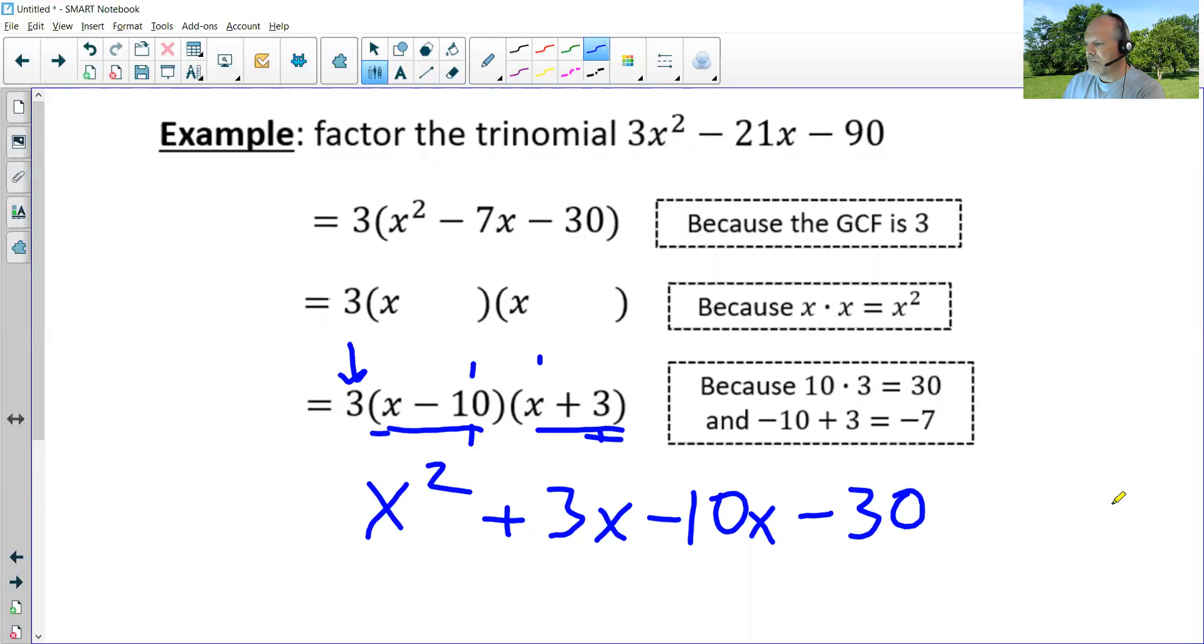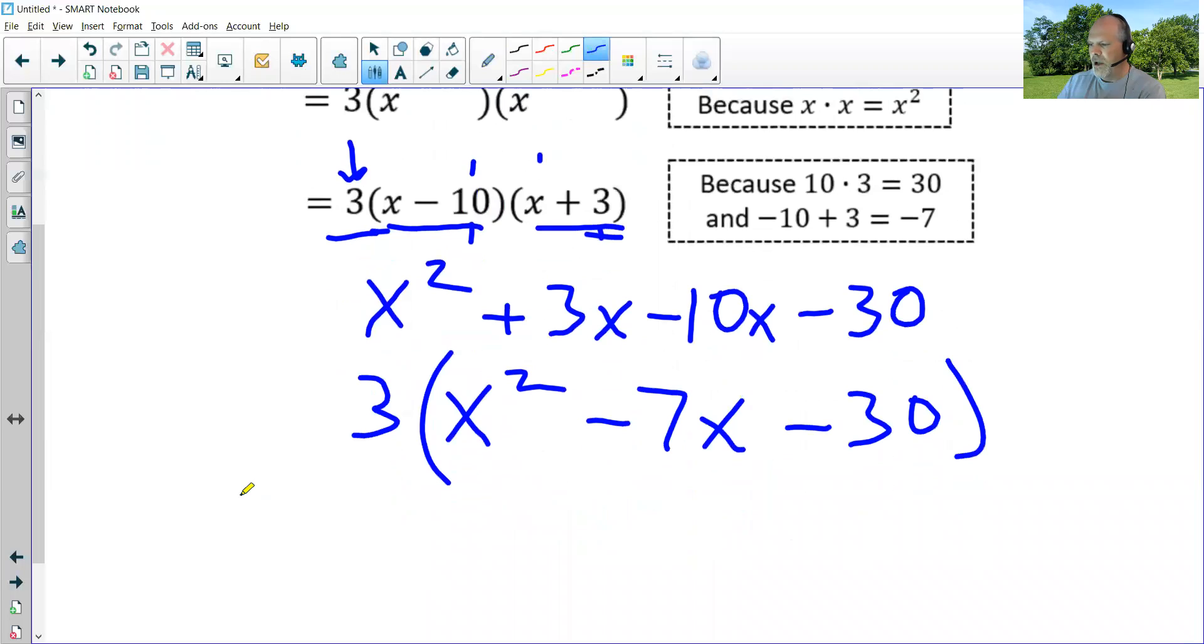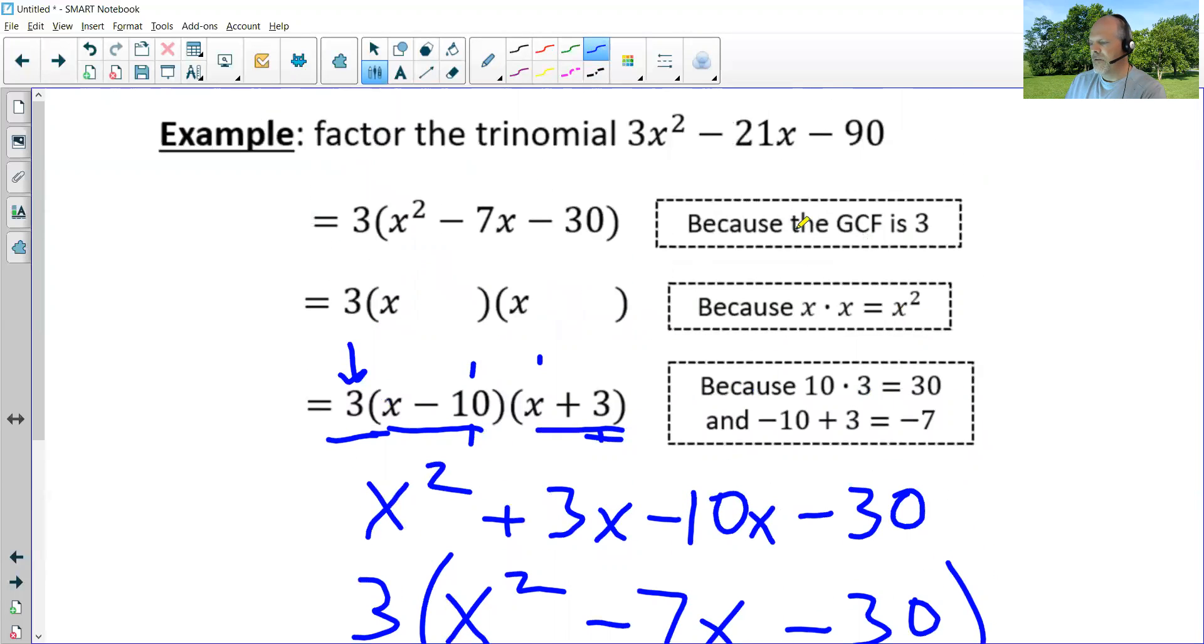Combine, and I get x squared minus 7x minus 30. And then don't forget the three in front. So when I multiply this out, I get 3x squared minus 21x minus 90. And if I go back to the first problem, it matches.